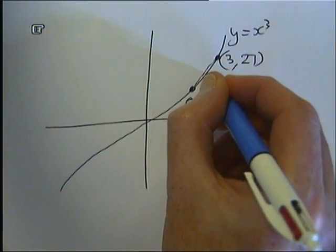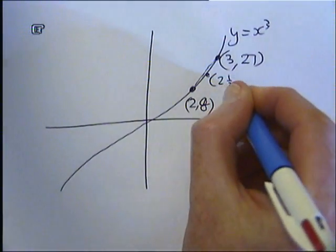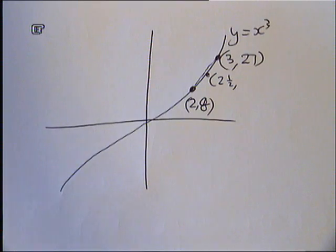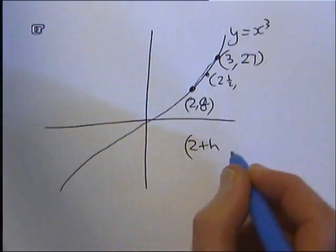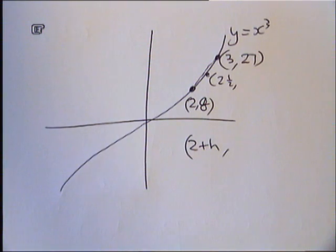And then what I want you to do is to try where the x coordinate is 2 plus h, where h is very, very small. So see if you can work through that on your own, do exactly the same process, and see if you can get the gradient, what that will be. Exactly the same as what we've done before. I'm going to stop the recording now and just help my class go through that bit.